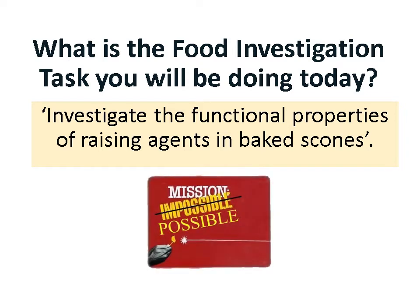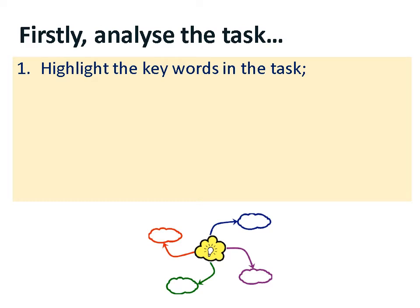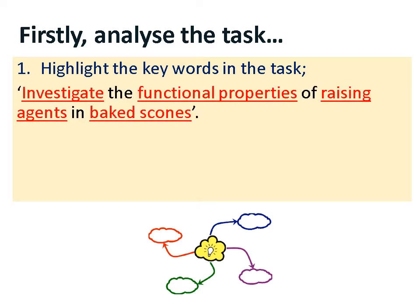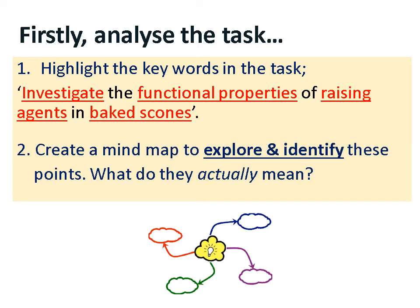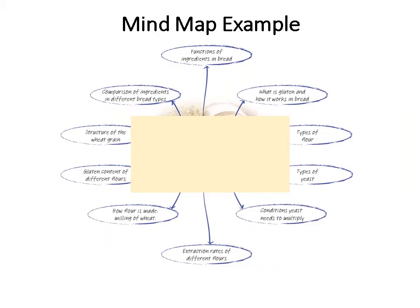The way to start is by researching. First, you analyze the task — 'investigate the functional properties of raising agents in baked scones' — and highlight the keywords. Keywords in this case are: investigate, functional properties, raising agents, and baked scones. If you just read that sentence as it is, it sometimes doesn't make sense, so you need to break it down. The first thing to do is produce a mind map to explore and identify what these keywords mean.